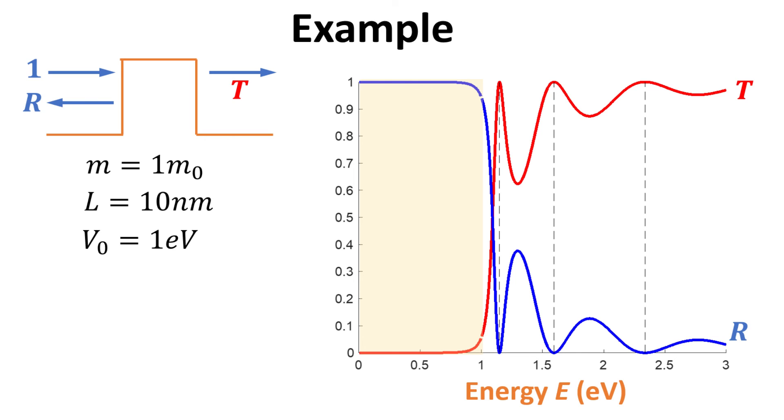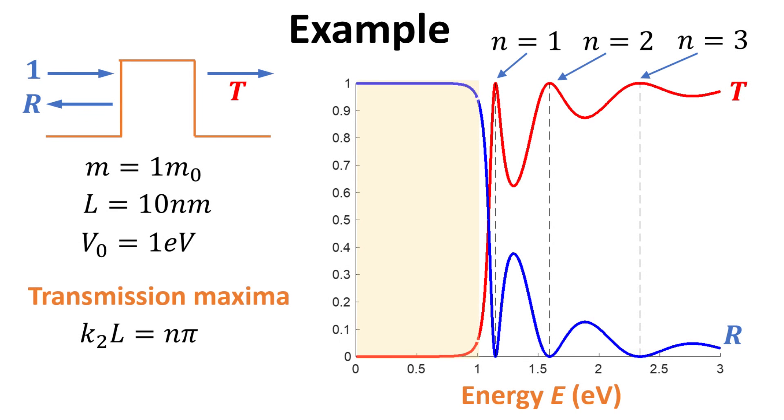We see the transmission quickly approaches unity, and it oscillates, but never exceeding 1. One can check that the maxima of the transmission occurs when the wave vector K2 multiplied by the length L are integer multiples of π. This resonant condition coincides with the condition where the half wavelength of electron corresponds to the width of the barrier L.